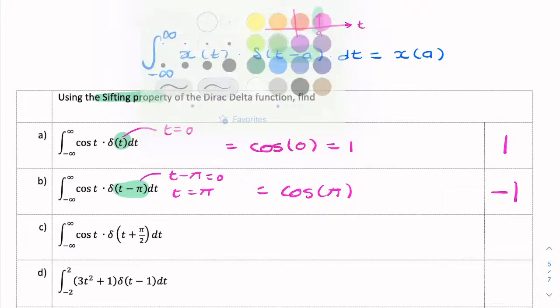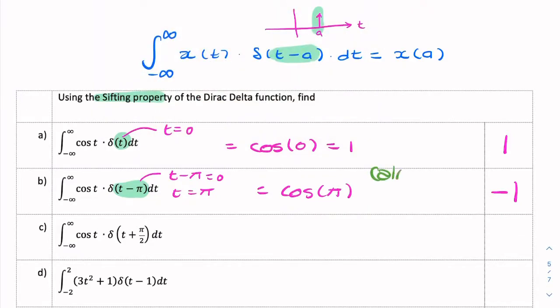Now, if you don't get negative one, it means your calculator isn't in radians. So you need to have the calculator in radians. Sometimes it's easy you can calculate it without a calculator, but sometimes it isn't. So make sure your calculator is set to radians.